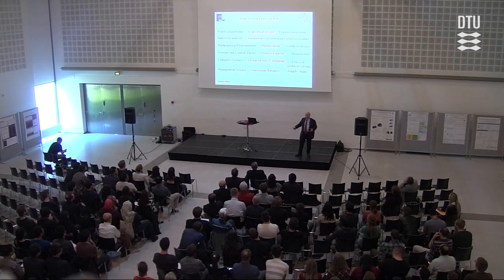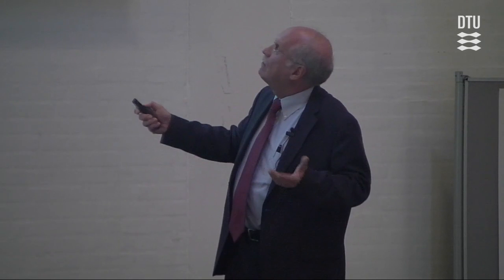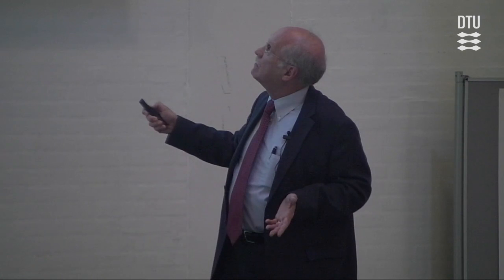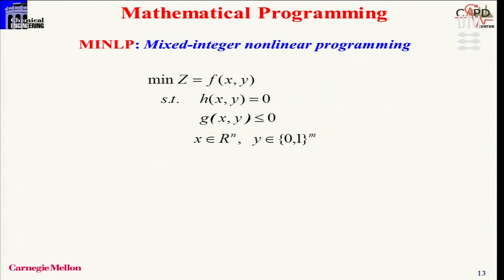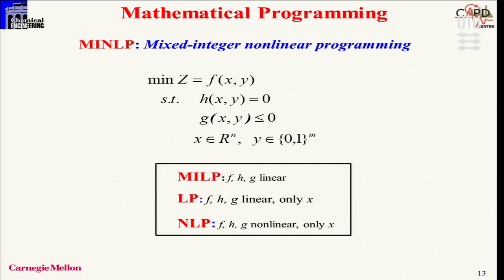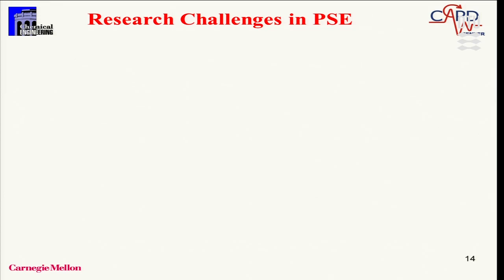As an example, in mathematical programming — my favorite subject — we worry about solving mixed-integer nonlinear programming problems with continuous and discrete variables, including mixed-integer linear programming and nonlinear programming. In order for PSE to address these problems, we need a whole set of machinery, one of which is mathematical programming. So having seen these trends, what are the challenges we're facing? We can classify them into three major areas: product and process design with greater emphasis on product design, energy and sustainability, and enterprise-wide optimization.